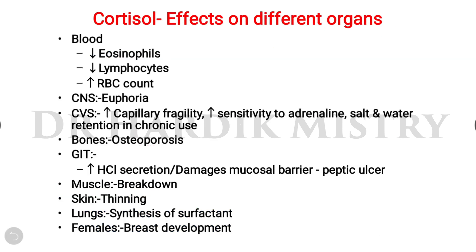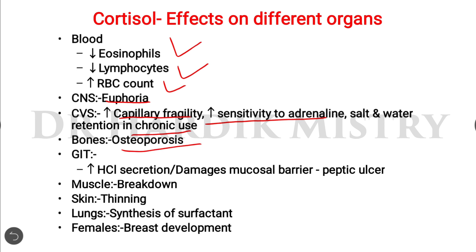Effects of cortisol on different organs: on blood, it decreases eosinophils and lymphocytes, and increases RBC count. In the CNS, it causes euphoria. In the cardiovascular system, there is increased capillary fragility and increased sensitivity to adrenaline, salt and water retention. On bones, it causes osteoporosis. On the GIT, it increases HCl secretion, which damages the mucosal barrier and leads to peptic ulcer.